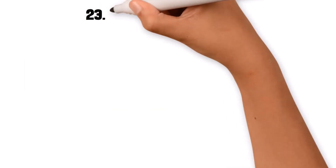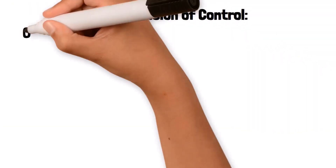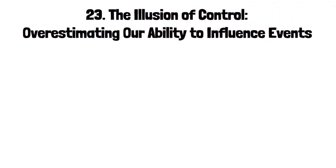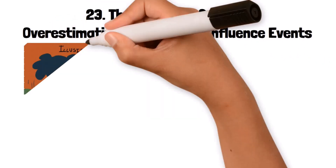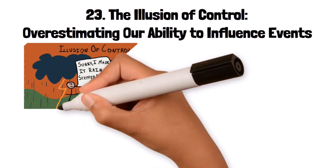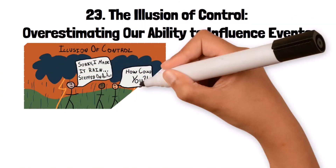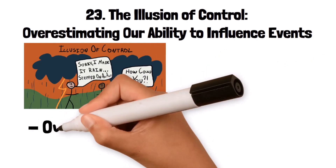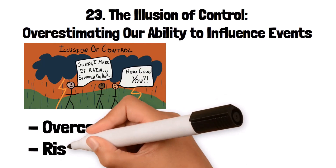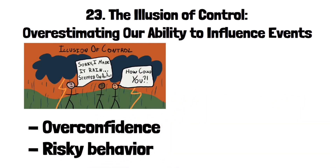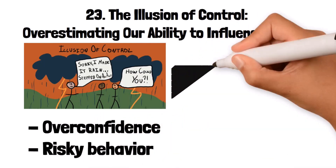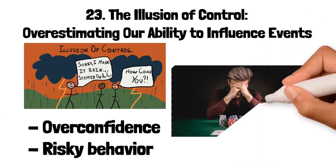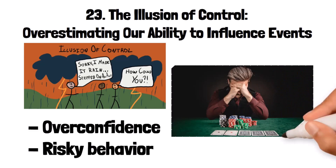23. The Illusion of Control: overestimating our ability to influence events. The illusion of control is the tendency to overestimate one's ability to control or influence outcomes, even in situations where chance plays a significant role. This bias can lead to overconfidence and risky behavior. For example, a gambler might believe that a lucky behavior — like wearing a particular shirt — can influence the outcome of a game of chance, even though the outcome is random.